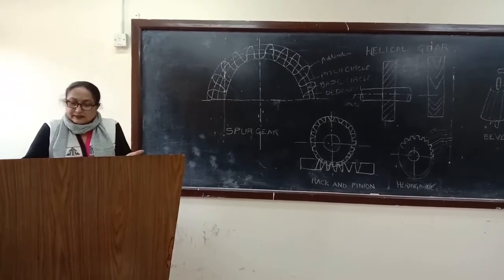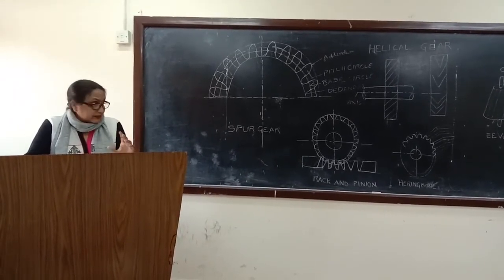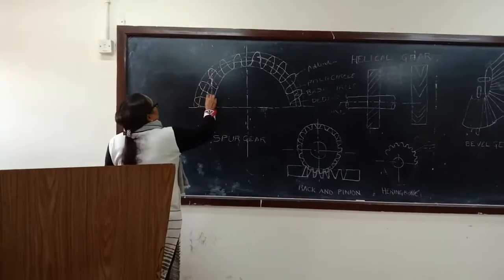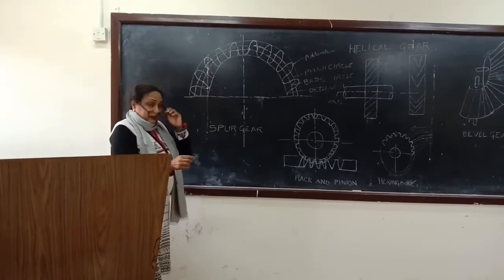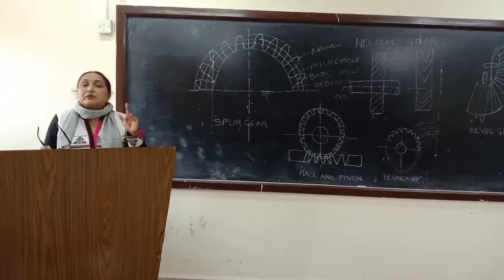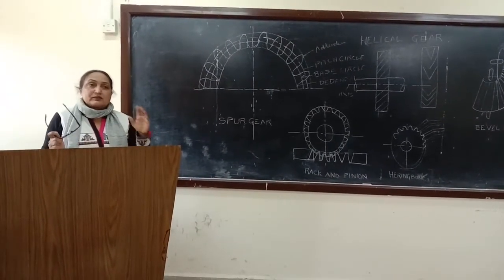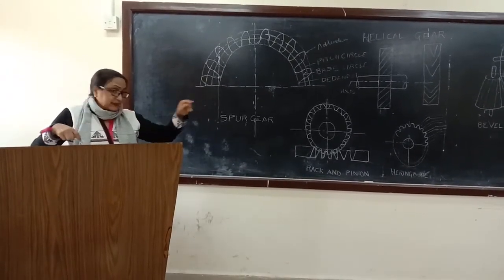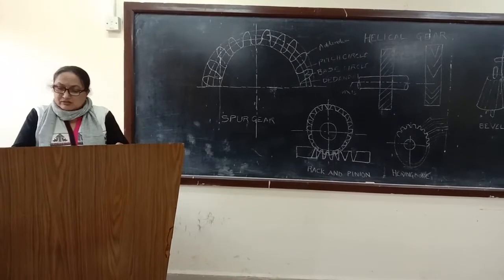Inclined gears increase the contact area, resulting in lower noise. Spur gear produces noise, while helical gears are less noisy.